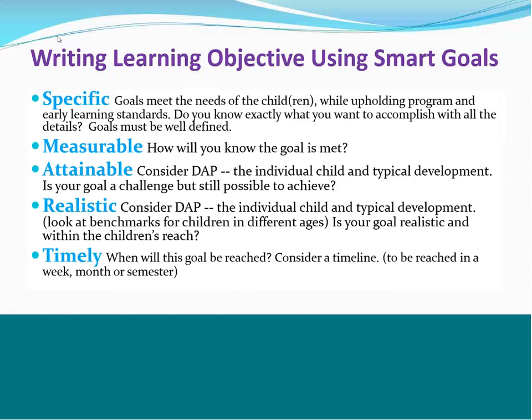And is it realistic? Once again, you want to consider DAP, the individual child, and reciprocal development — making sure that you're looking at your benchmarks for your state's early learning standards. For Head Start, it's the early learning outcome framework for children at different ages and stages. Is your goal realistic and within the children's reach? And then the last thing that I see a lot of my students forget is: is it timely? When will this goal be reached? You always want to have some kind of timeline — it could be a week, month, semester, whatever it is — but you want to make sure that you have a timeline to ensure that it's being tracked and measured.